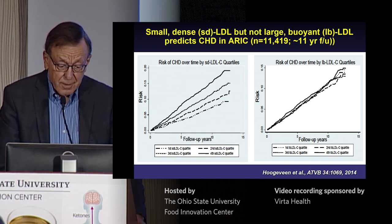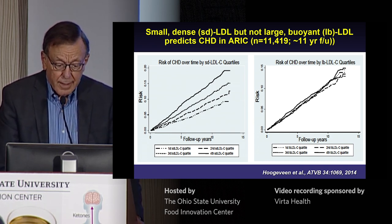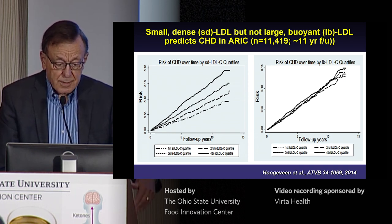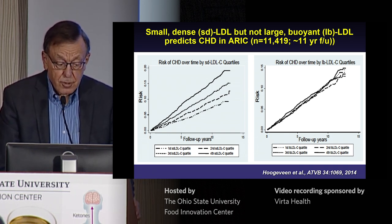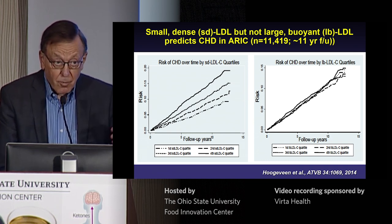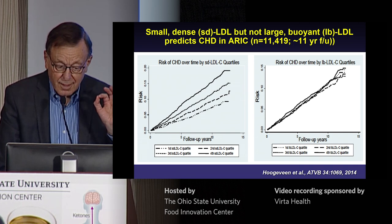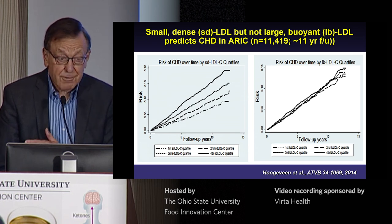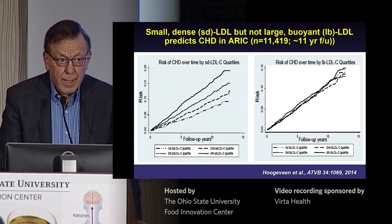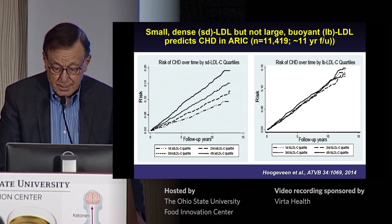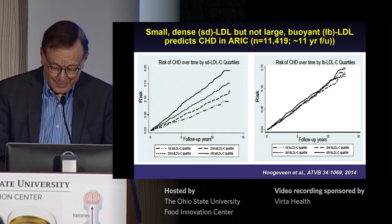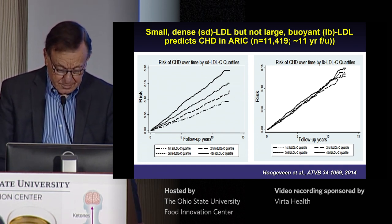The literature examining the relationship of LDL particles to cardiovascular risk is quite extensive, though somewhat methodology-dependent. This is one of several studies that convincingly shows a discordance between large buoyant LDL on the right and small dense LDL on the left in relation to cardiovascular disease risk. In the very large ERIC study, quartiles of small dense LDL cholesterol are progressively related to increased risk — very compatible with what we've always said about cholesterol — whereas there's absolutely no relationship for large buoyant LDL.